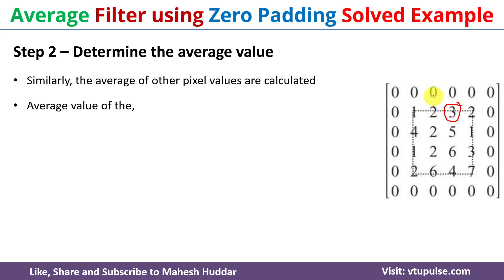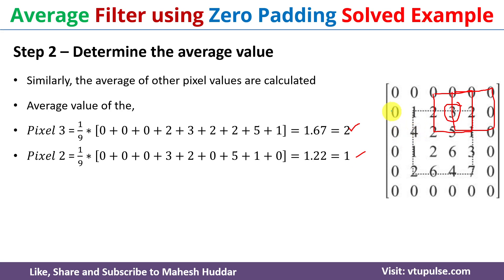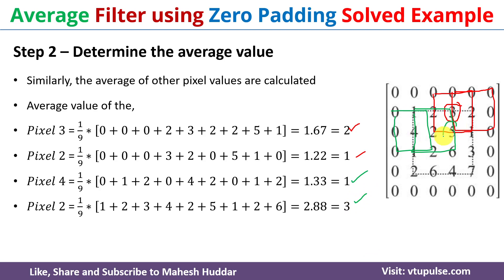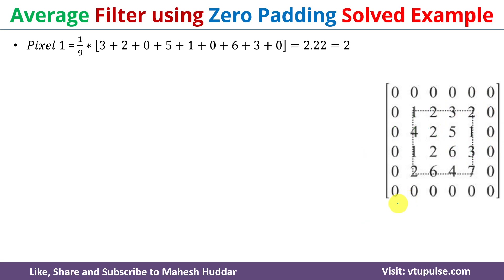For pixel 3, we consider the three cross three neighbor matrix, add all nine values and divide by nine to get 1.67, which is approximately 2. For the next pixel (value 2), we consider the three cross three neighbor matrix, add nine values and divide by nine to get 1. For pixel 4 we get an average of 1, for the next 2 we get 3, for the 5 we get 3, and for the 1 we get 2. We calculate the average values for the remaining pixels similarly.